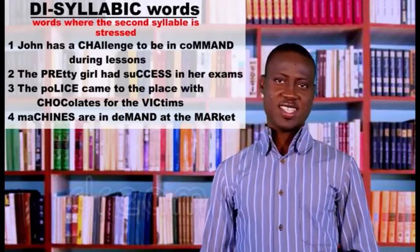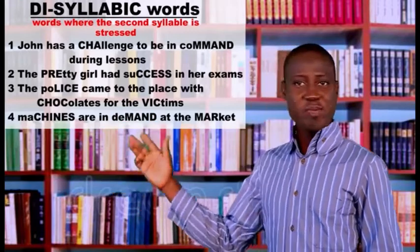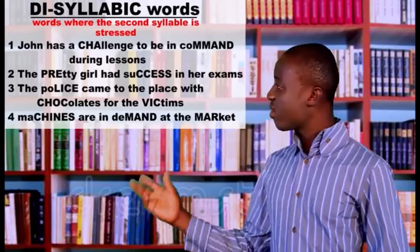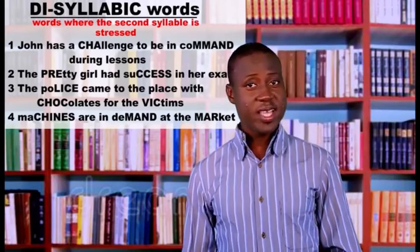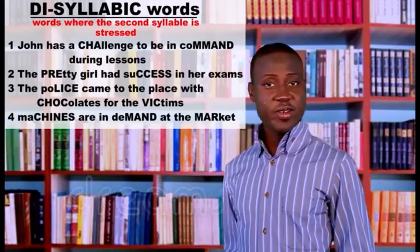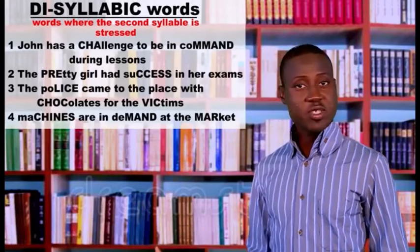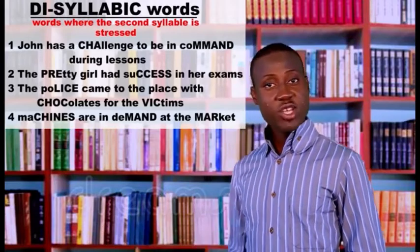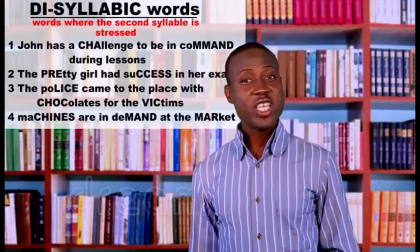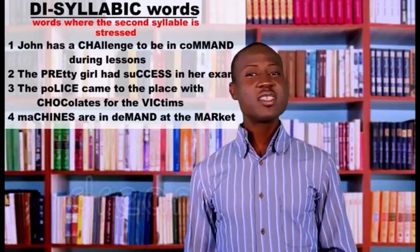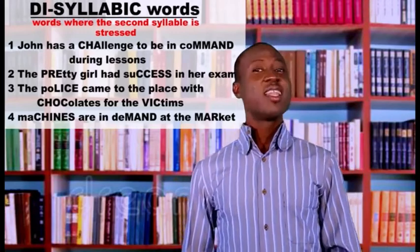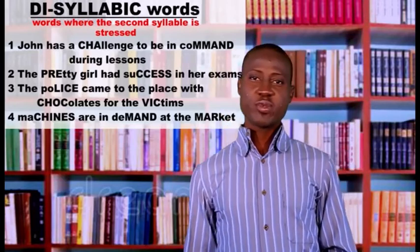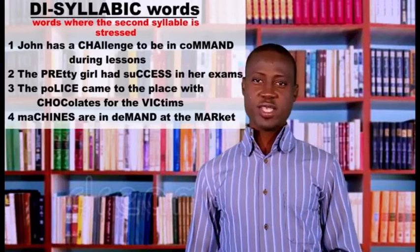Number one: 'John has a challenge to be in command during lessons.' Number two: 'The pretty girl had success in her exams.' Number three: 'The police came to the place with chocolates for the victims.' Number four: 'Machines are in demand at the markets.' I want you to practice with these words with two syllables — keep using them until you get the best out of them.